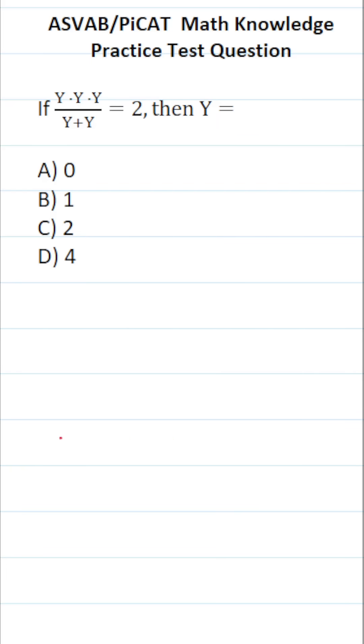This math knowledge practice test question for the ASVAB and PICAT says, if y times y times y divided by y plus y equals 2, then y equals. In other words, we're going to be solving this equation for y.